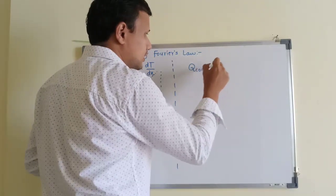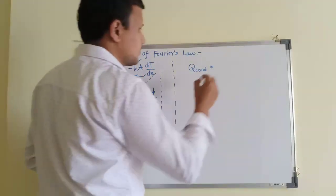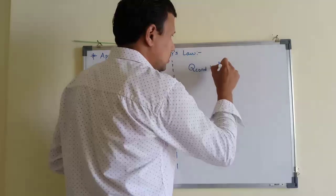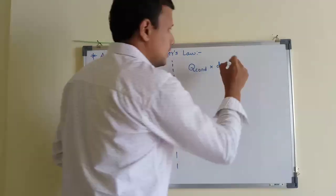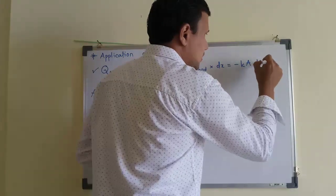So we will now separate the terms. Heat transfer by conduction, we will take this dx on the other side of the equality sign. So Q conduction into dx is equal to minus KA dT.